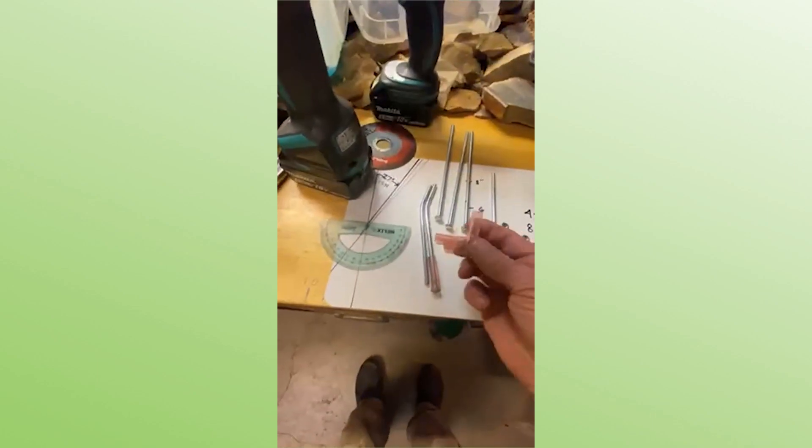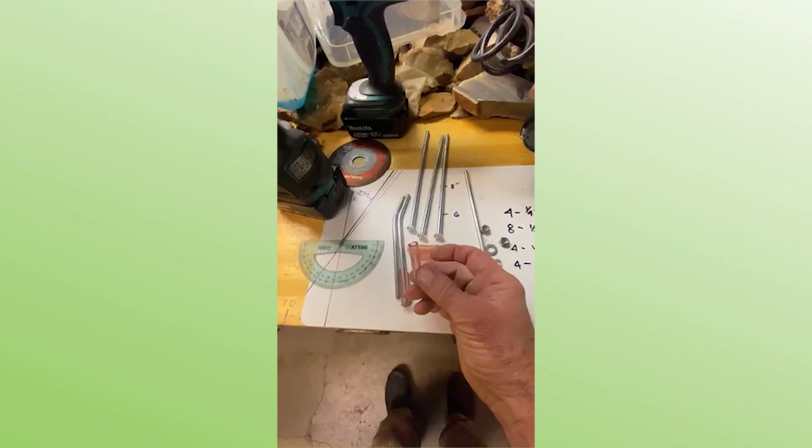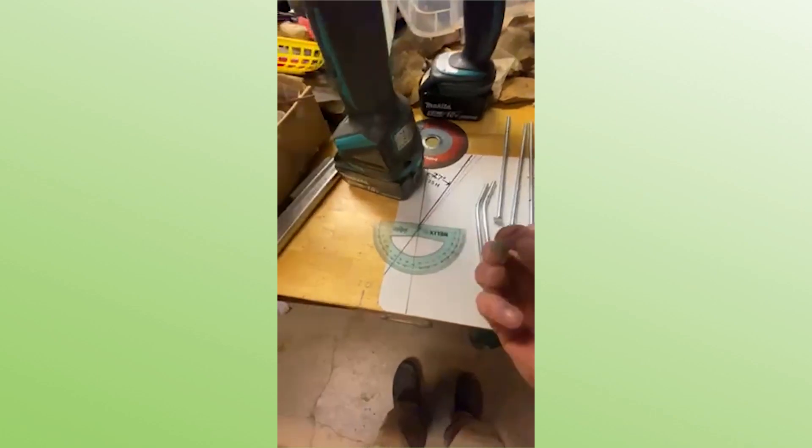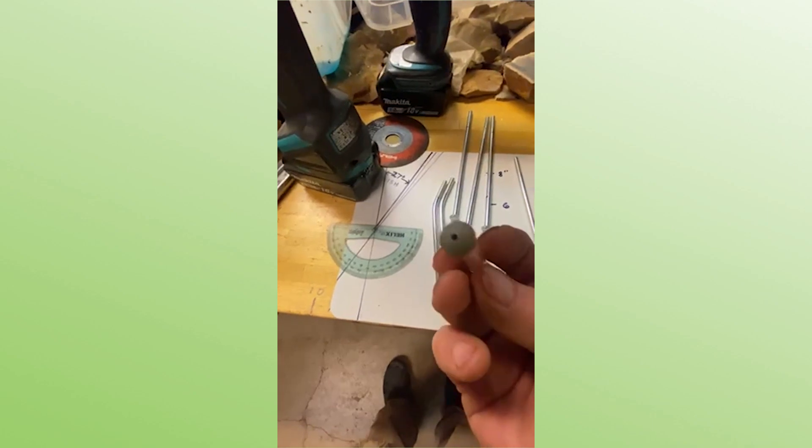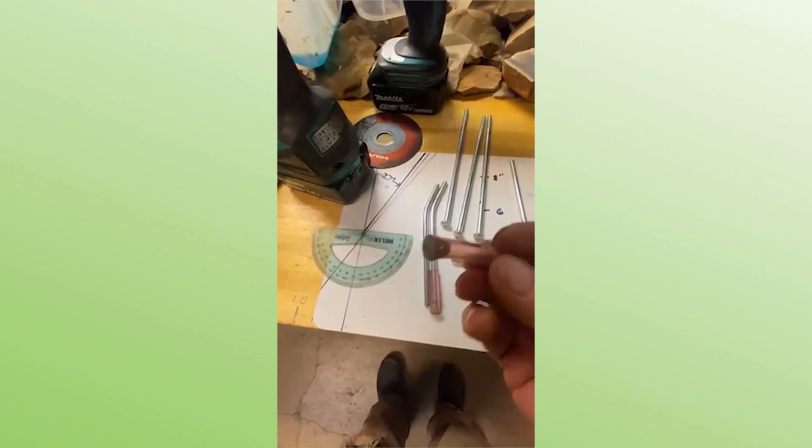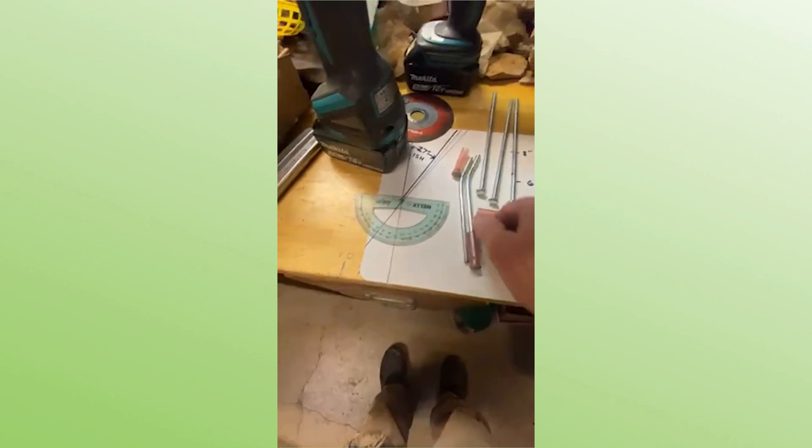I took some quarter inch ID tubing so that I could make feet. These are little bumpers that really came from steel door jams, but you can pretty much put any kind of feet on.